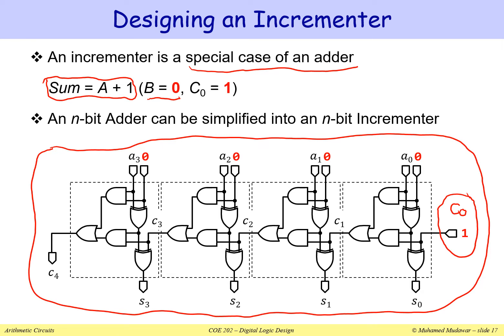Look at this AND gate. This AND gate is ANDing A0 with zero, so the output will always be zero regardless of input A0. So we don't need this gate. The same is true for the other AND gates — there are four AND gates highlighted with X that are not needed, because their outputs are zeros since B is zero. We can simply remove them.